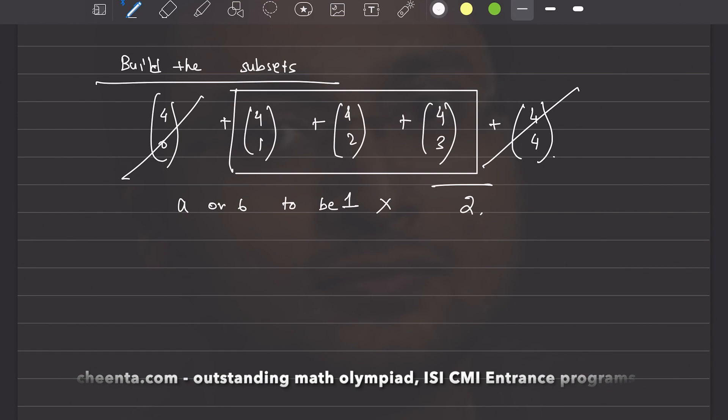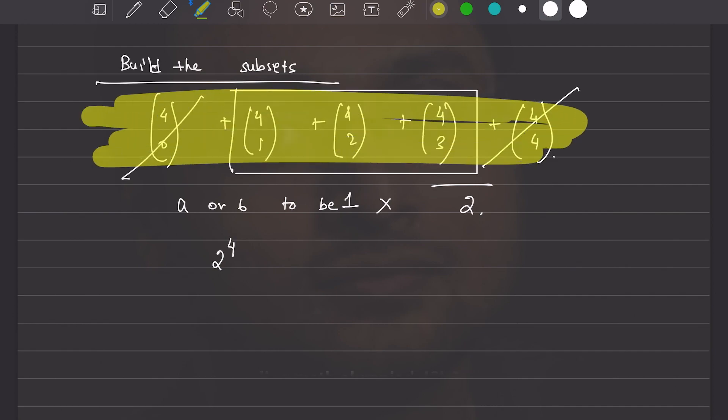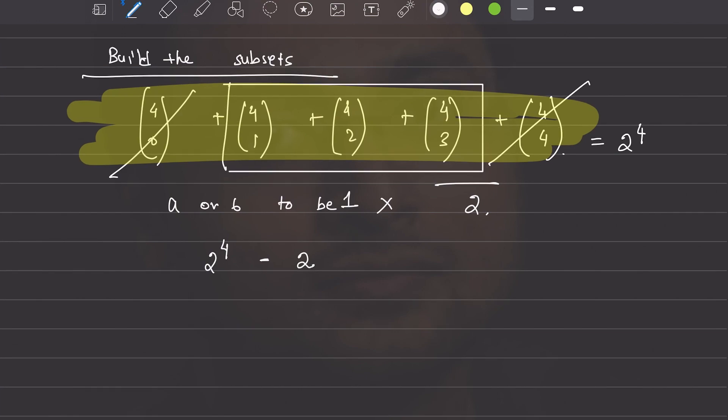In fact, I could write two to the power four because all of these numbers will add up to two to the power four. And I can subtract two because I deleted these two cases. And I can divide that by two. So, can you put the final answer in the chat?